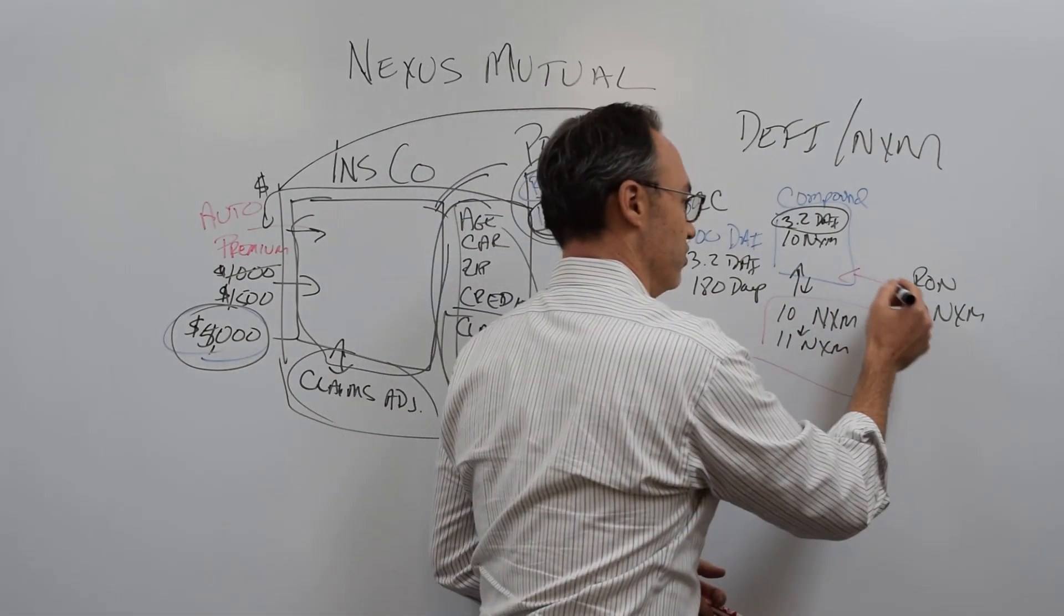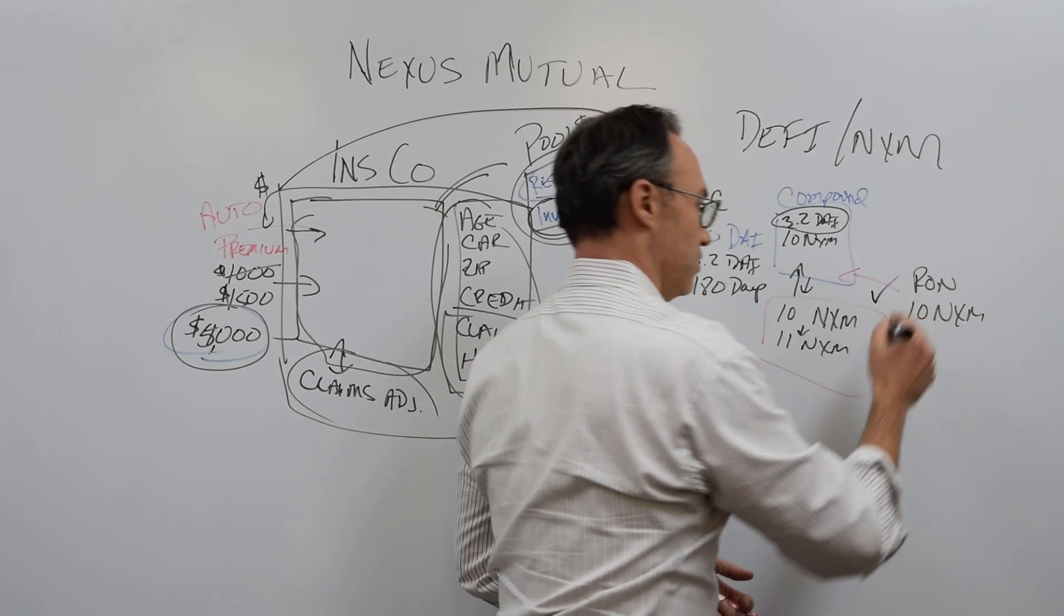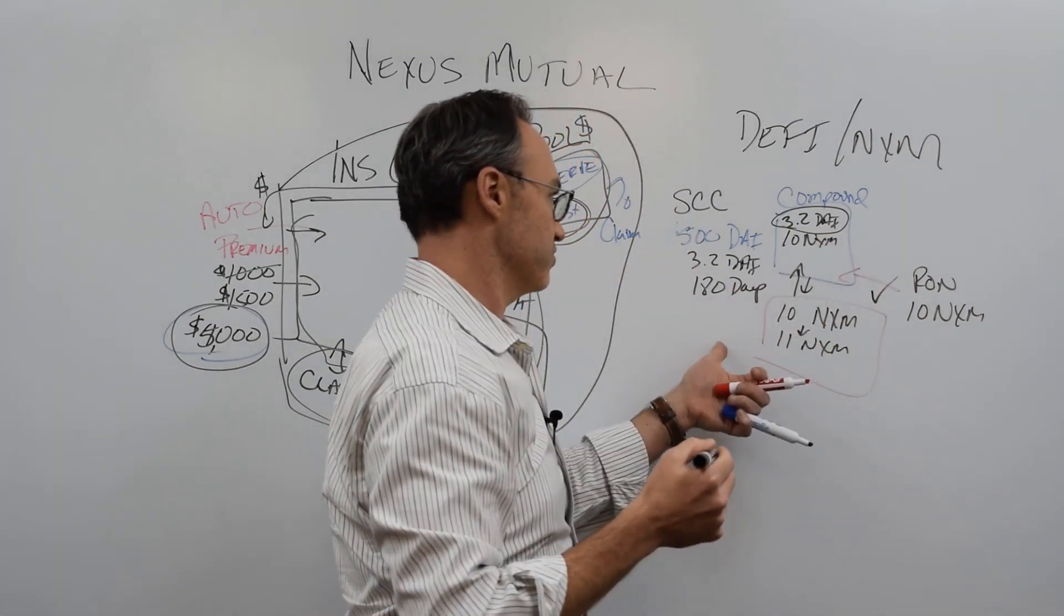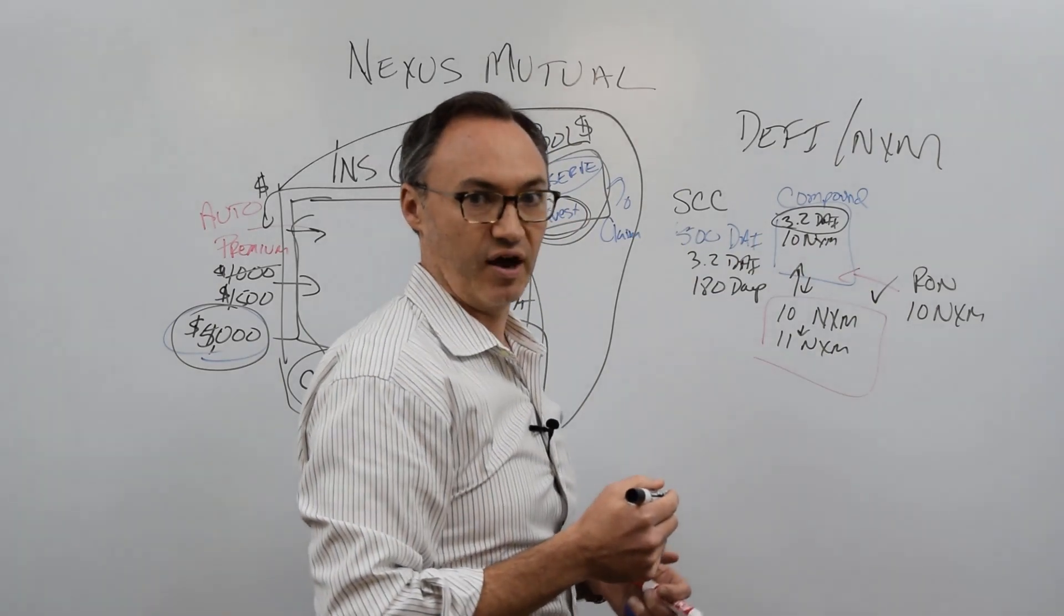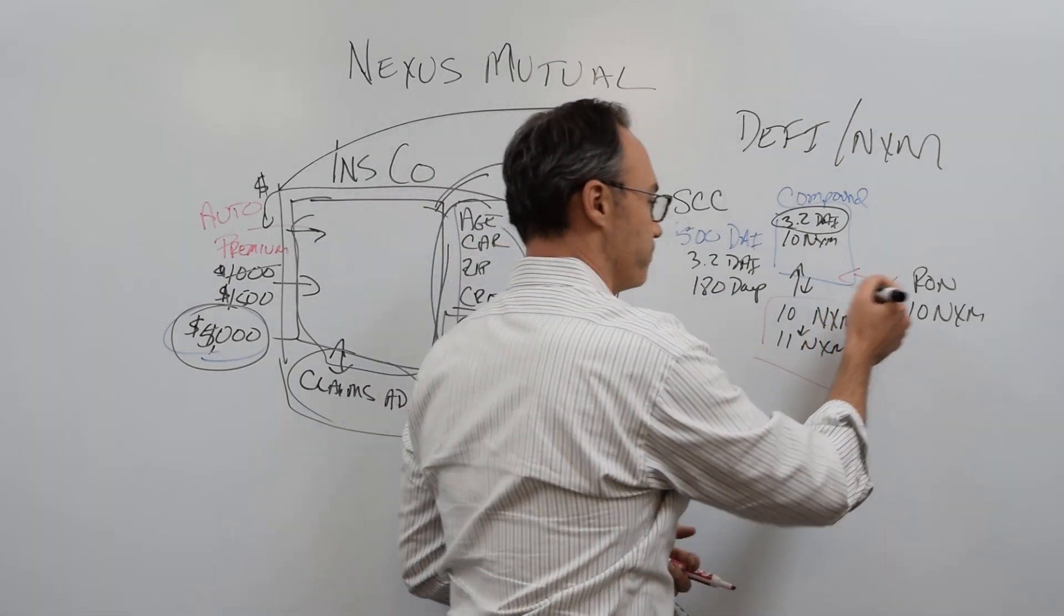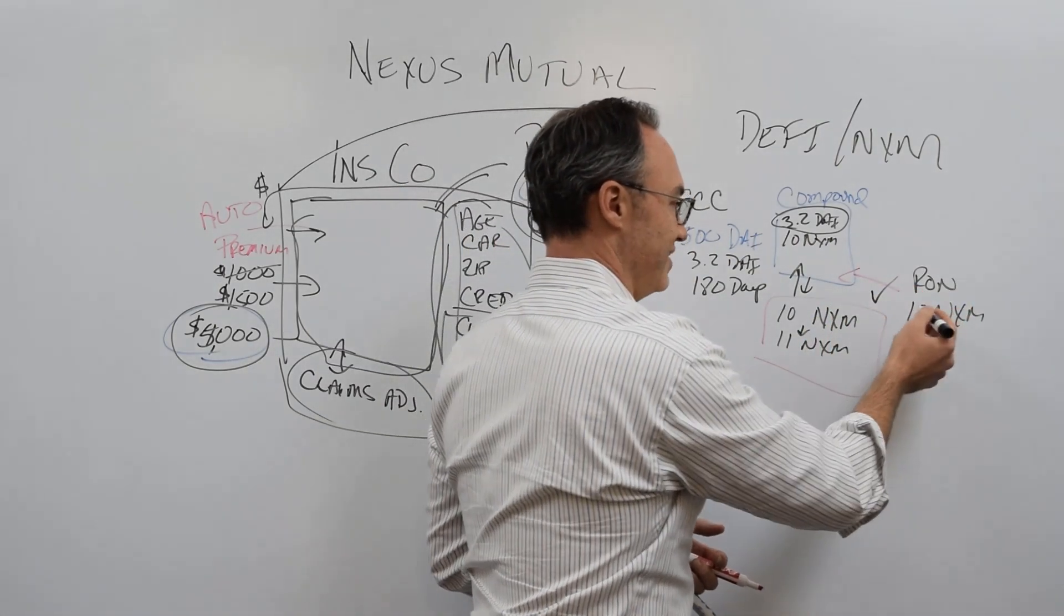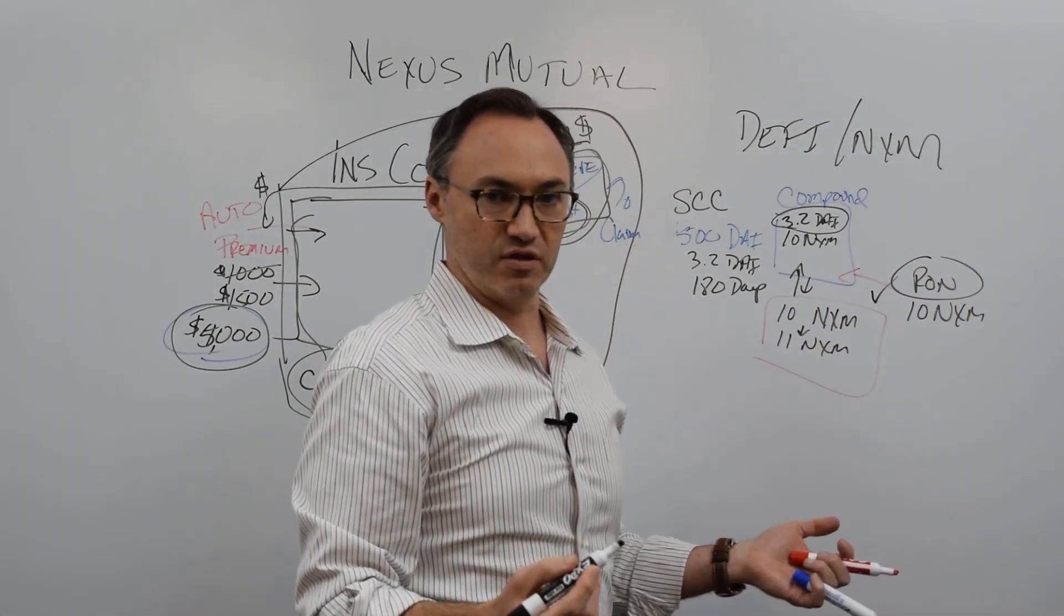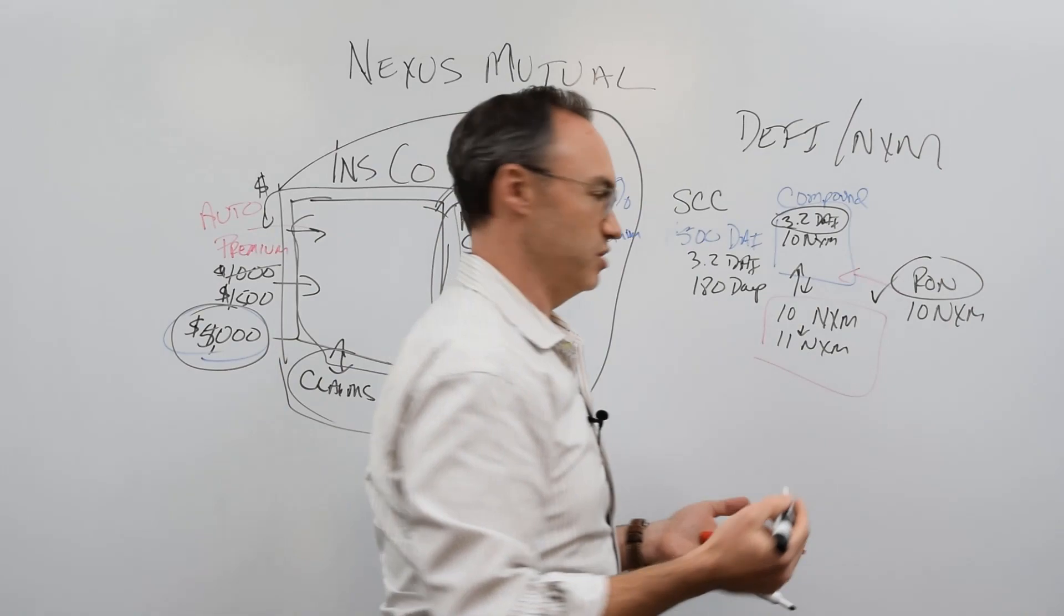And if it's true that someone did break into this and this is a valid claim, we're going to throw our 10 Nexus Mutual tokens in there. And that's how strongly we feel about this. So Ron says, yes, this is a valid claim. You need to pay Adam and everyone else out their 500 DAI that they paid the insurance premium for. So because he did that, I can feel pretty comfortable that he has the incentive to give the right response, to be truthful.